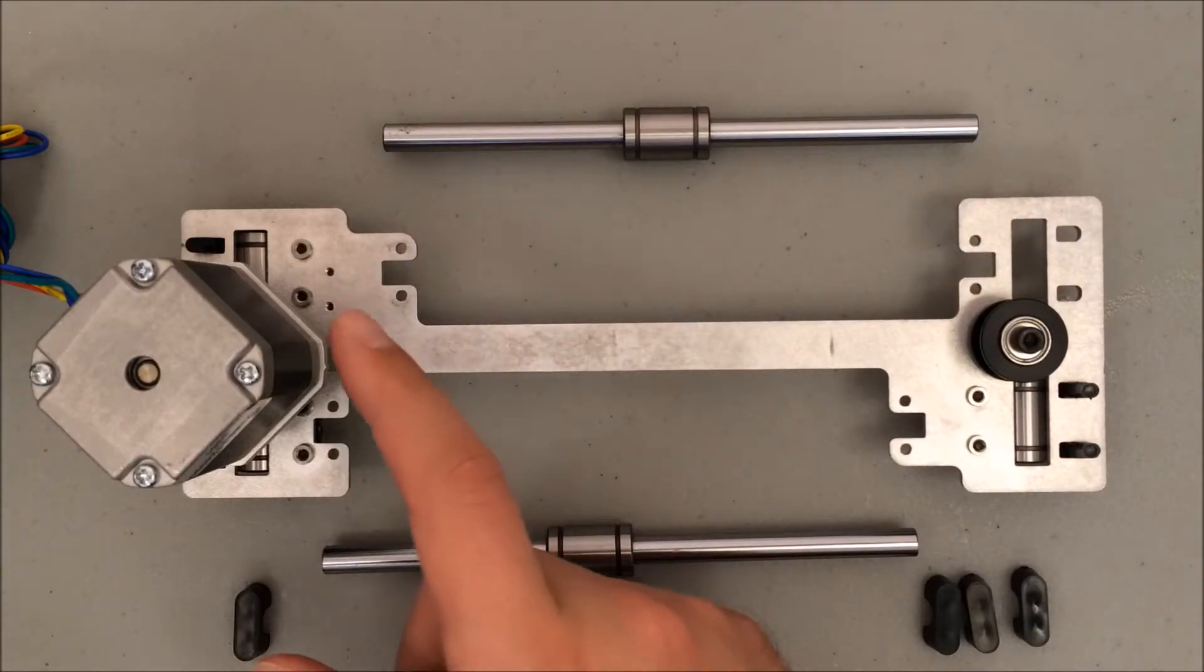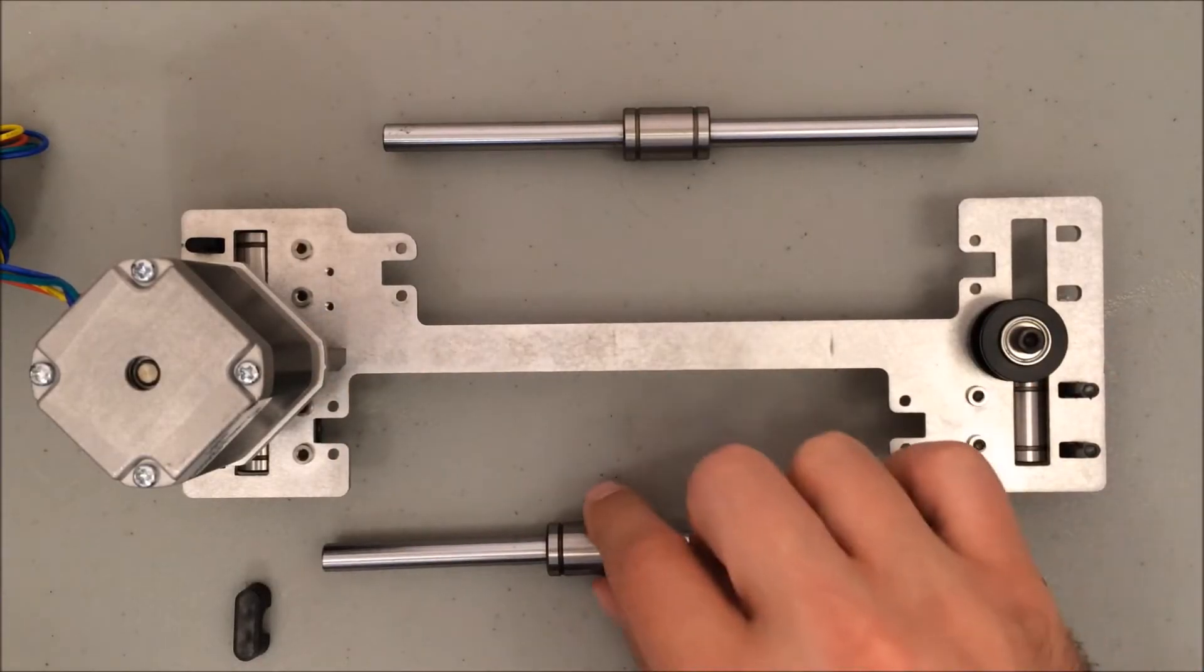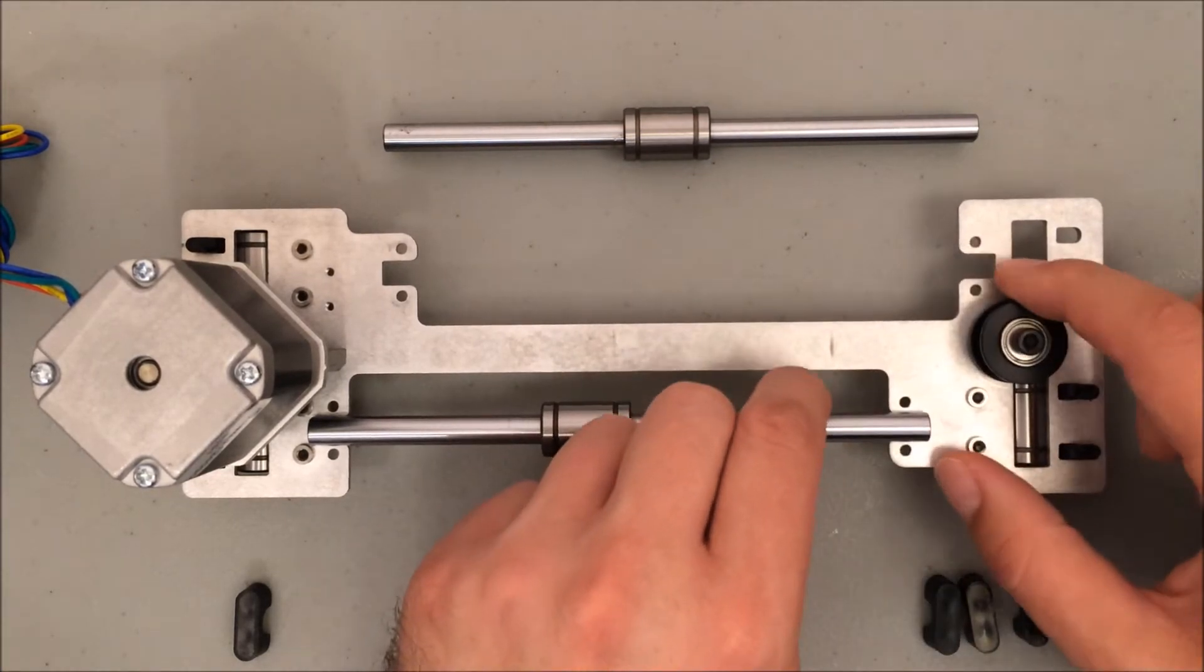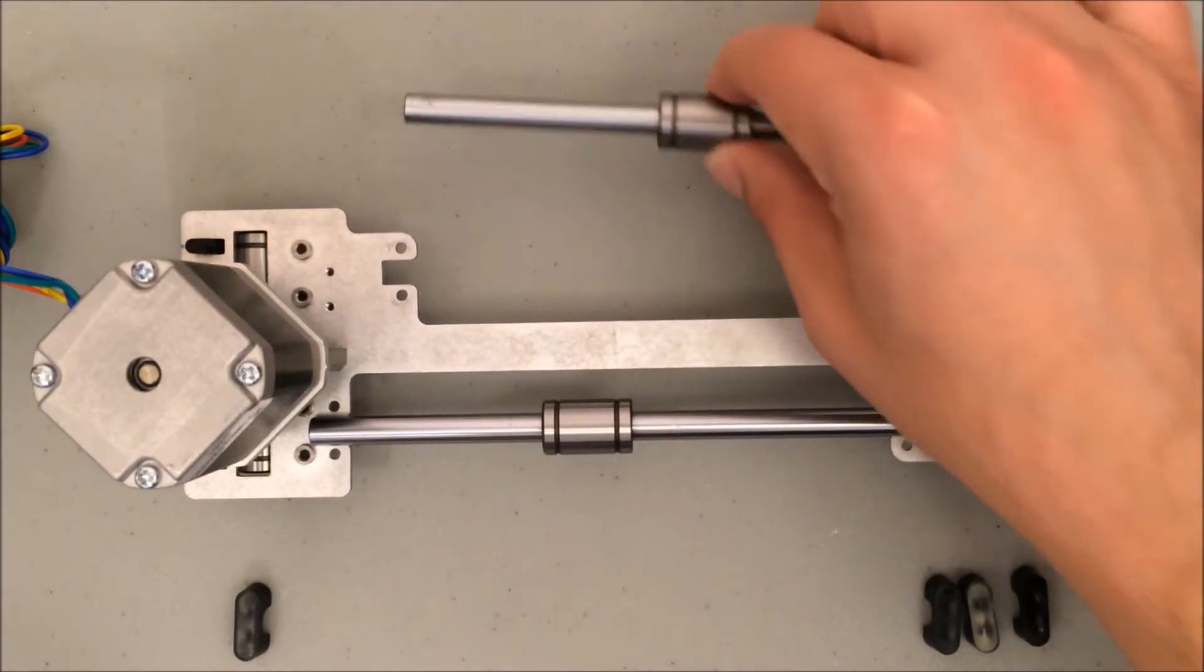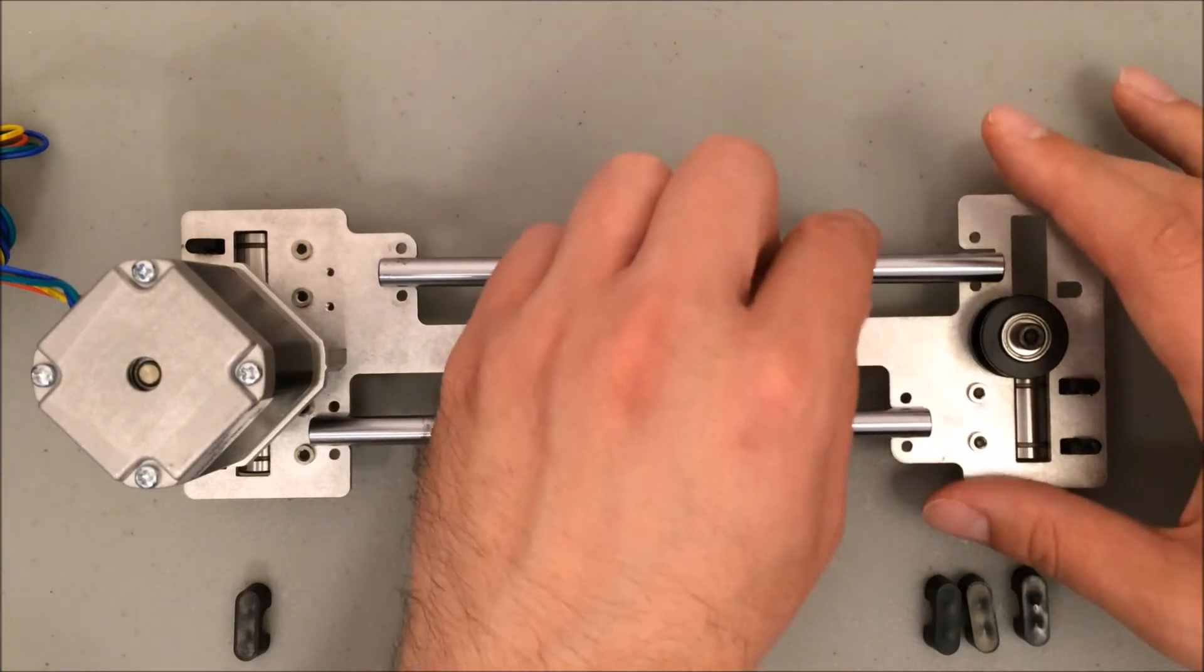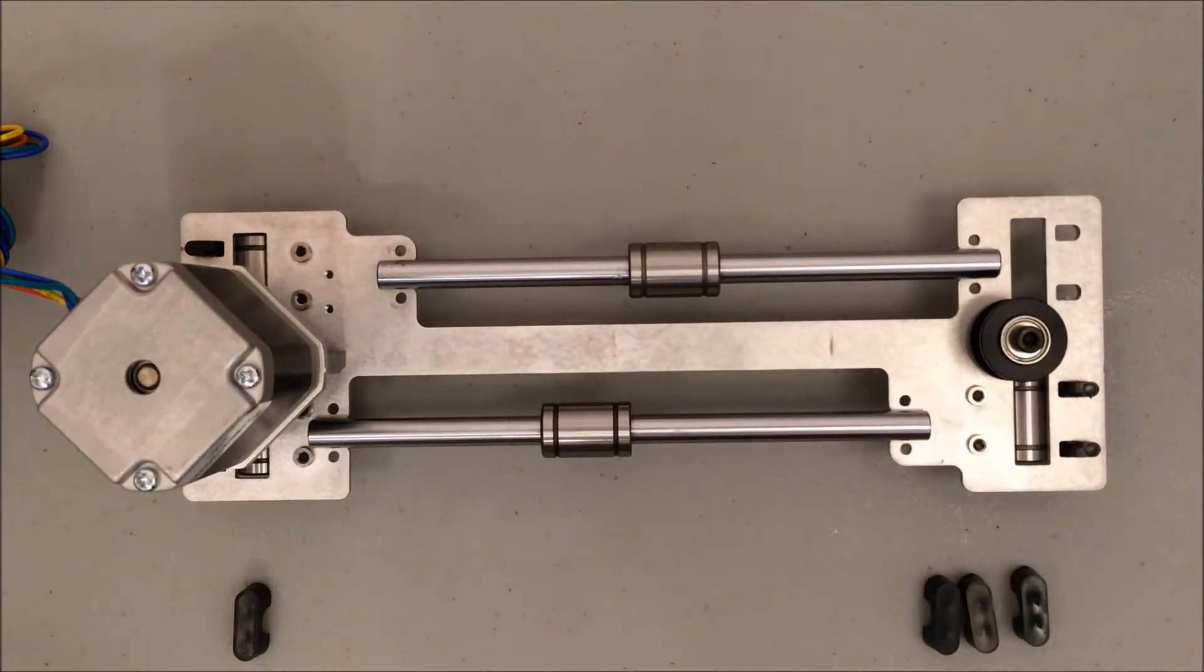The smooth rods will be on the same side as the motor and idler pulley. They fit in these large trenches here. Sometimes you just got to wiggle them just a tiny bit to get them to drop in place. I find that if I just push it all to one side it seems to find its home inside that trench.